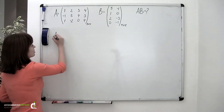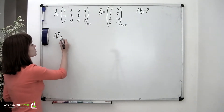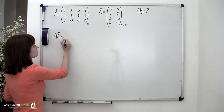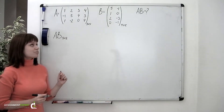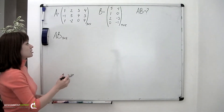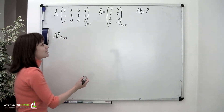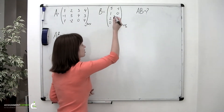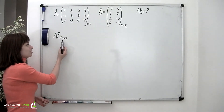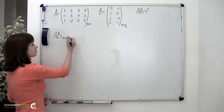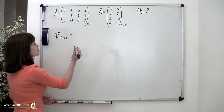The product matrix AB will be of the size 3 by 2. The size of the product matrix is easy to define — you simply take the first dimension of the first matrix being multiplied and the second dimension of the second matrix being multiplied. So we have a matrix of the size 3 by 2, which means it has 3 rows and 2 columns.